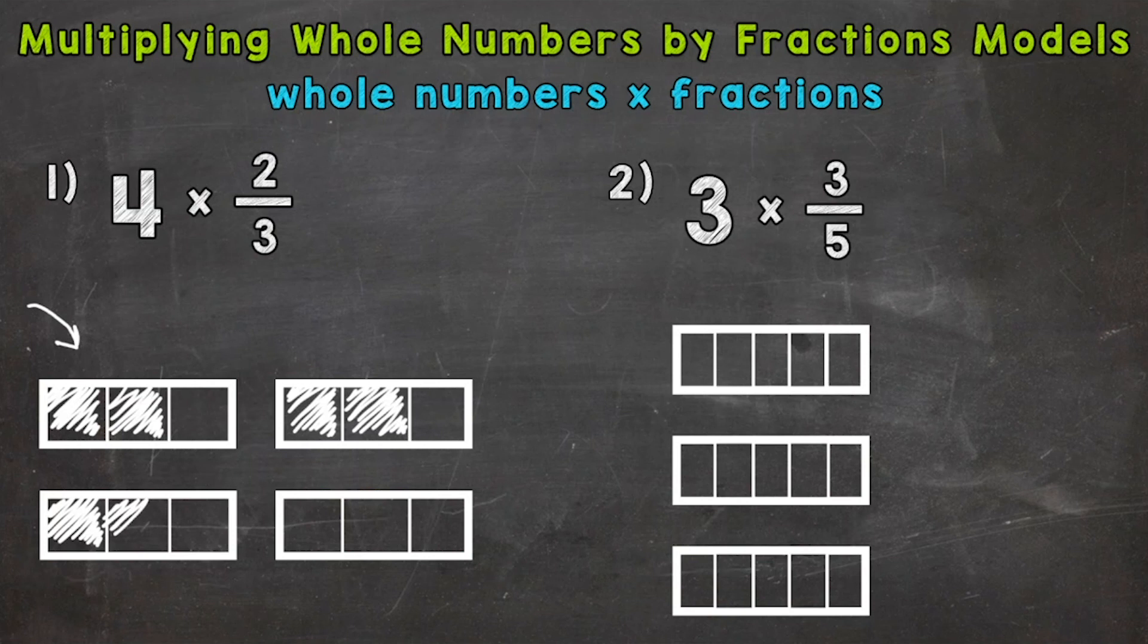One-third, two-thirds. So there's one more two-thirds. And let's do the last one here. One-third, two-thirds. So we have four groups of two-thirds there.